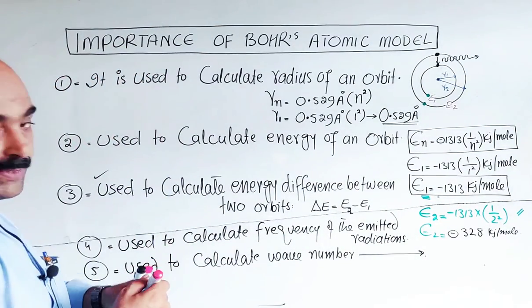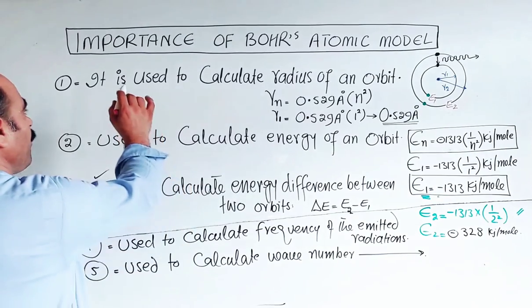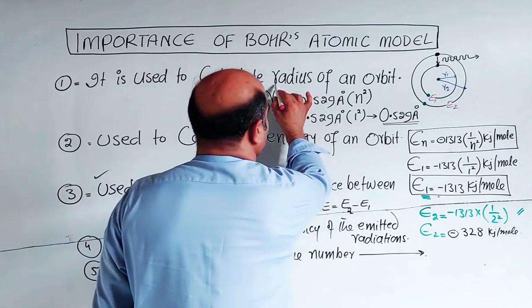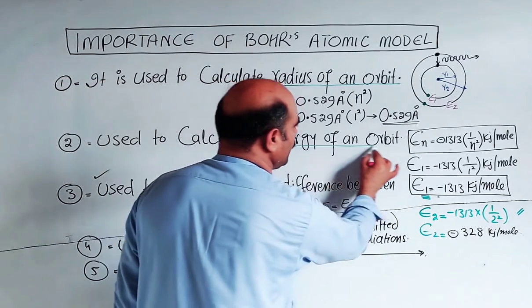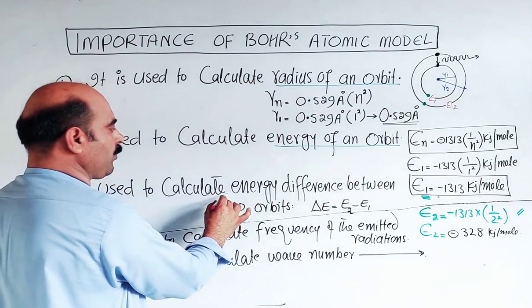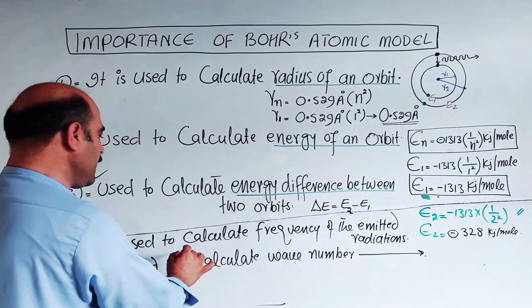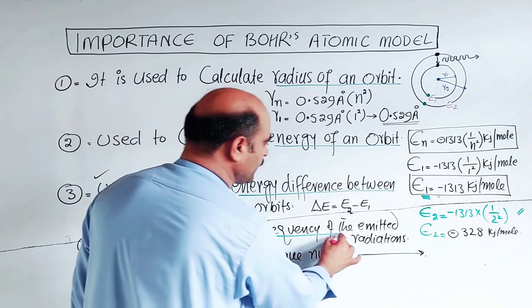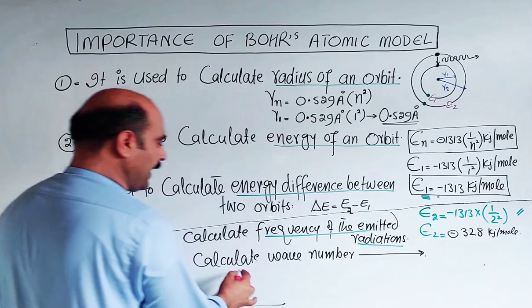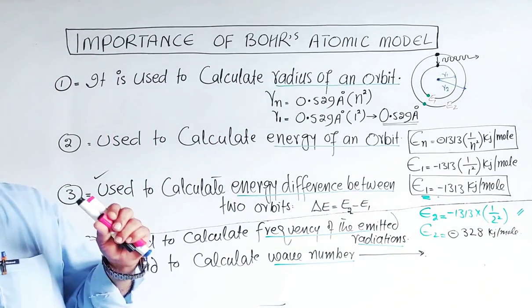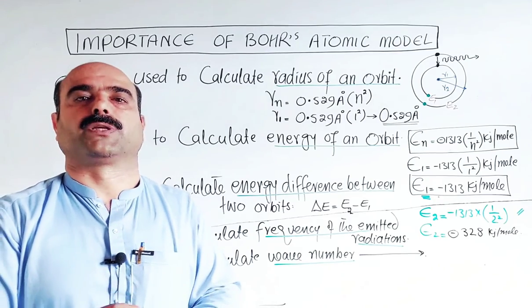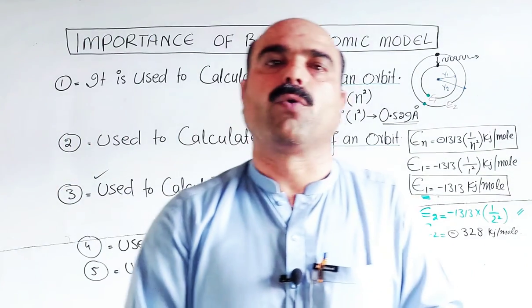Students, just focus on the basics. This is an introductory class. Let me summarize: Bohr's atomic model is used to calculate radius of an orbit, energy of an orbit, energy difference between two orbits, frequency of emitted radiation, and wave number of emitted radiation. That's the theoretical topic. This is a short question.